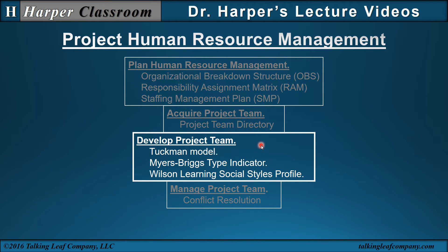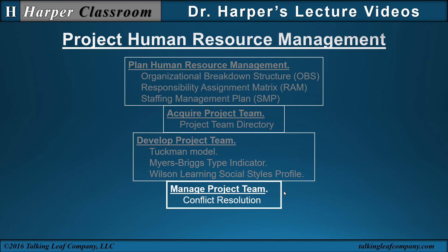Develop the project team: the Tuckman model addresses how people work as a group; the Myers-Briggs indicator addresses how people work individually; and Wilson Learning's social style profile indicates how people will contribute to the success of a team. In the Manage Project Team process, conflict resolution starts with analyzing the conflict — its source, type, basis, and level — and then addresses the mode of responding to achieve a project-driven conflict resolution.